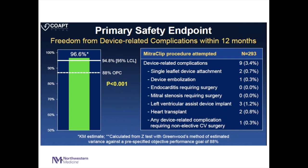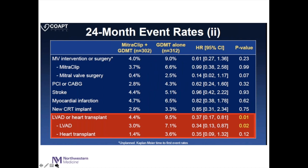The safety data showed very minimal complications — only a handful out of the 293 patients had any device-related complications throughout the procedure and through 12 months. On guideline therapy alone, 9.5% went on to having either a VAD or heart transplant. With MitraClip, it was a 50% reduction — only 4.4%. The transplant rate went from 3.6% down to 1.4%, and the VAD rate went from 7.1% down to 3%. All of these outcomes were significantly improved.